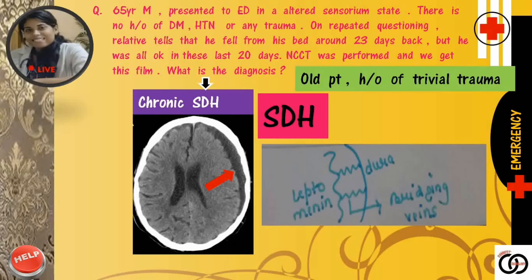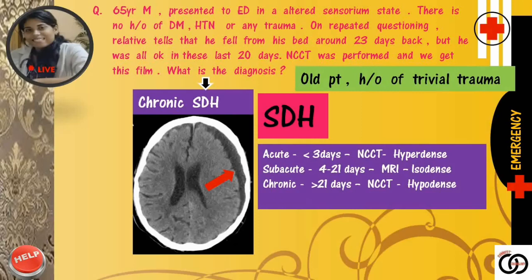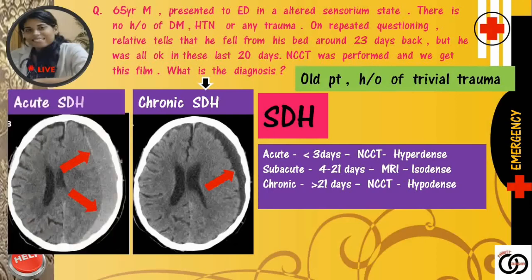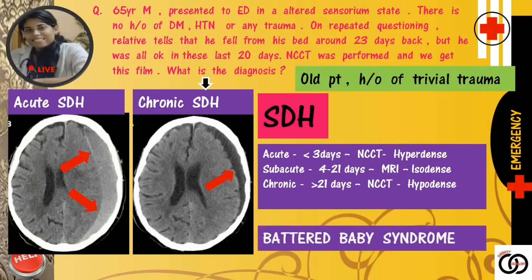Remember: SDH can be acute when it presents within 3 days, subacute when it presents between 4 to 21 days, or chronic when it presents after 21 days. The investigation of choice for acute and chronic SDH is NCCT, where acute bleed appears hyperdense and chronic bleed appears hypodense, and the investigation of choice for the subacute stage is MRI. Also remember, subdural hematoma can be seen in cases of battered baby syndrome because of the shearing tension between the dura and the brain when the child is shaken.